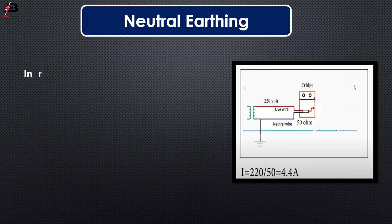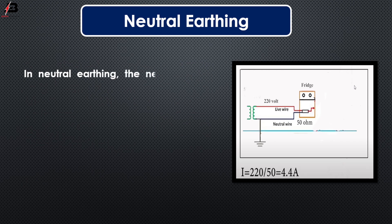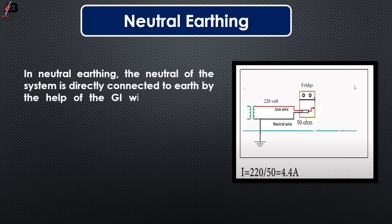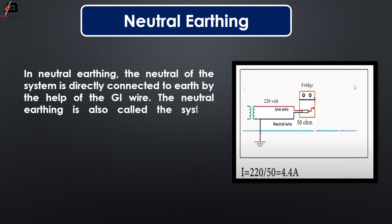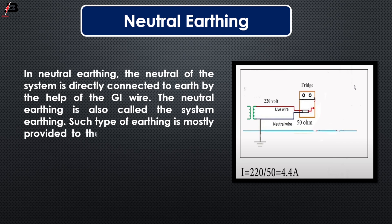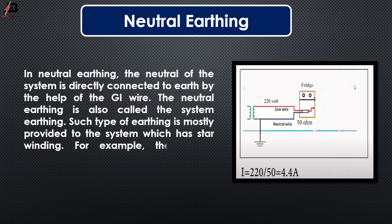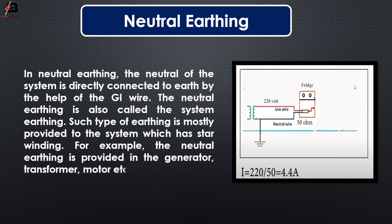Neutral earthing: in neutral earthing, the neutral of the system is directly connected to the earth by the help of the GI wire. Neutral earthing is also called system earthing. Such type of earthing is mostly provided to systems which have star winding. For example, neutral earthing is provided in the generator, transformer, motor, etc.